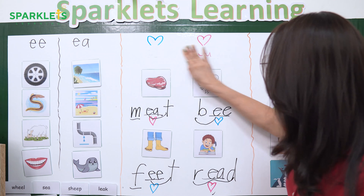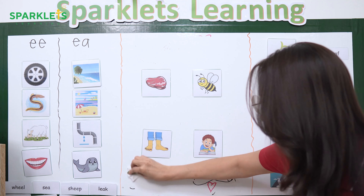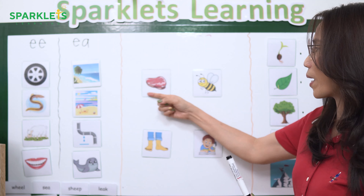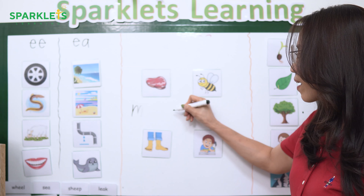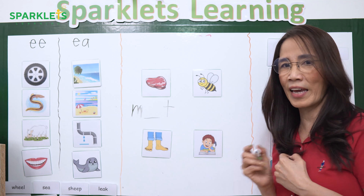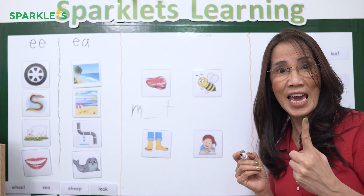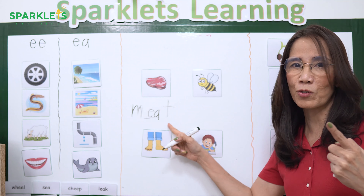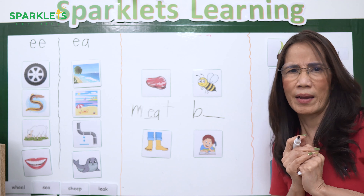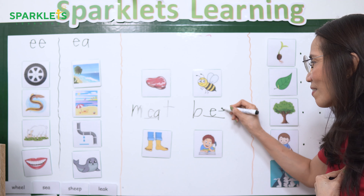Then erase everything — the clue and the spelling of words. You should be able to check if the children already remember the spelling by heart. Now there is no clue anymore, so let's see — can we spell the word meat? What is the final sound? T. And what is in the middle? Blue heart. Yes, it's blue. And blue heart is what? EE. Yes, correct.